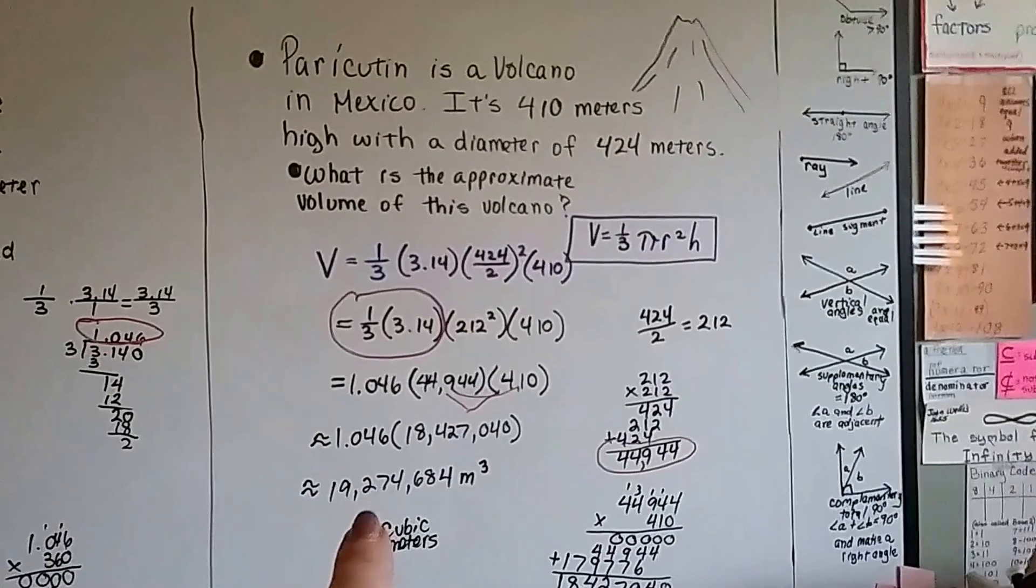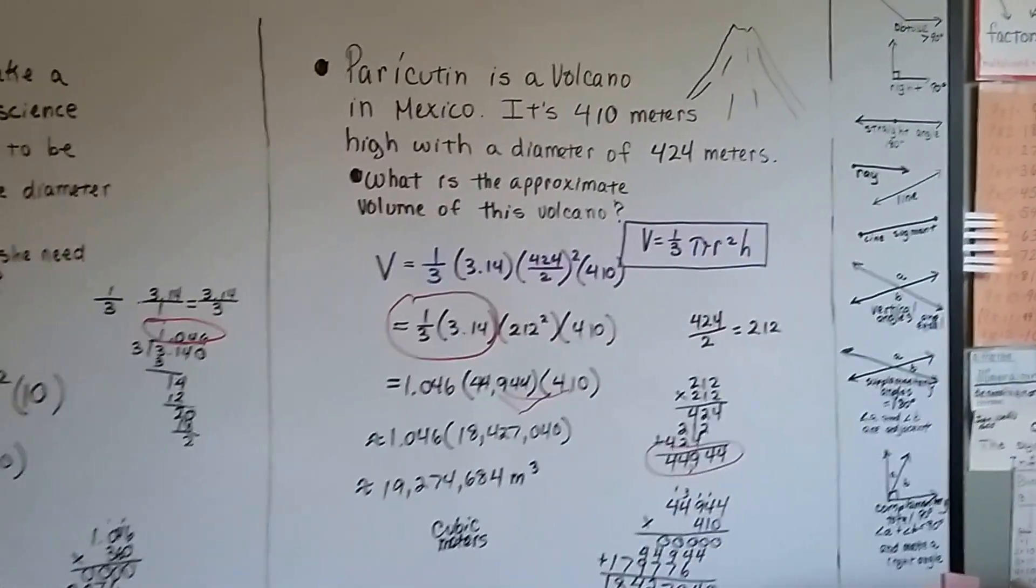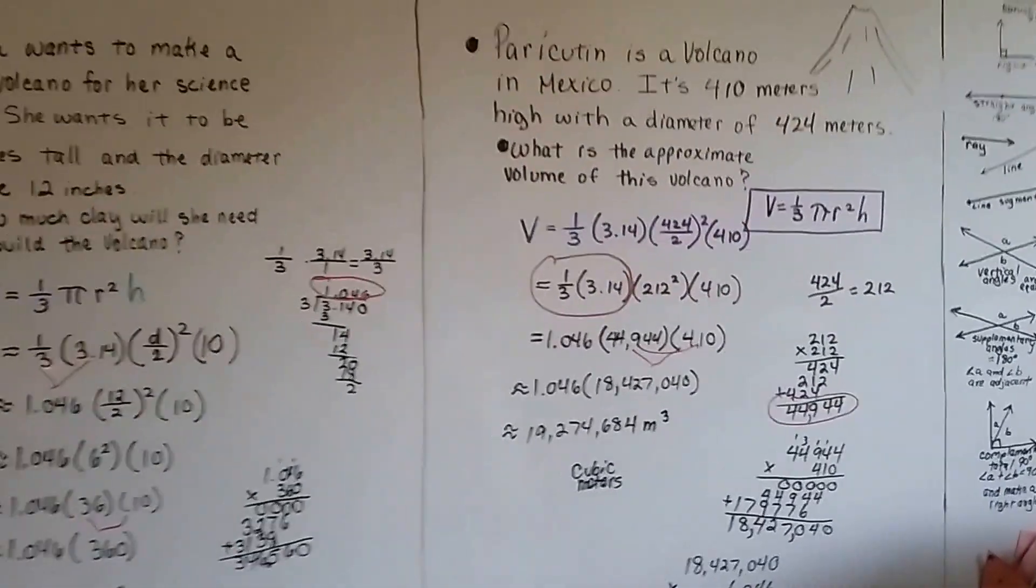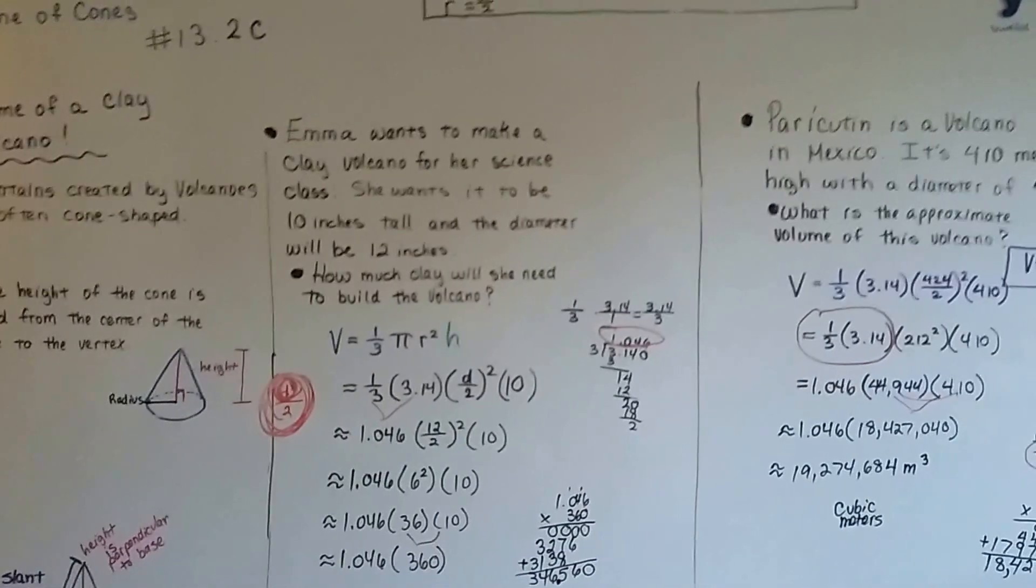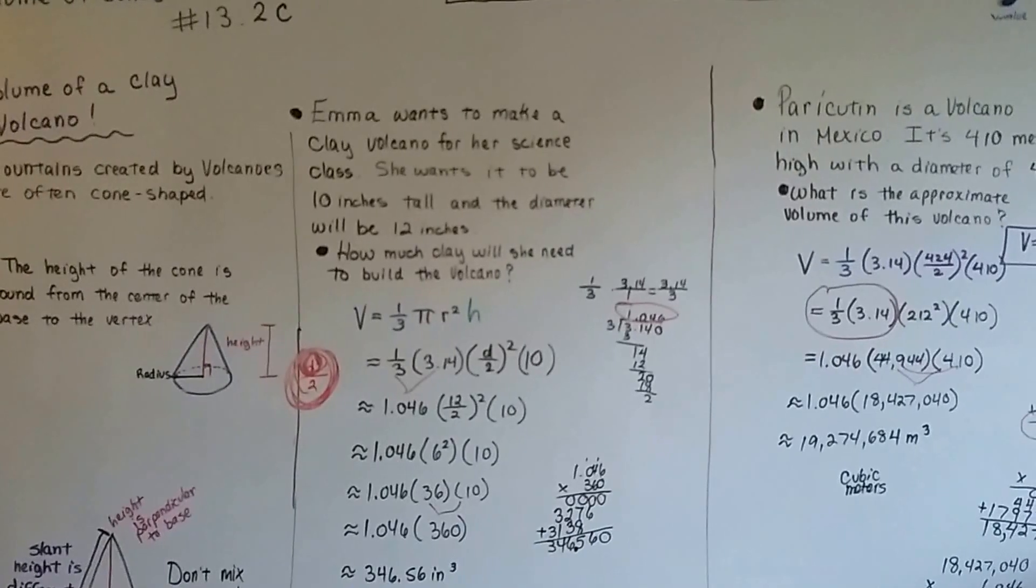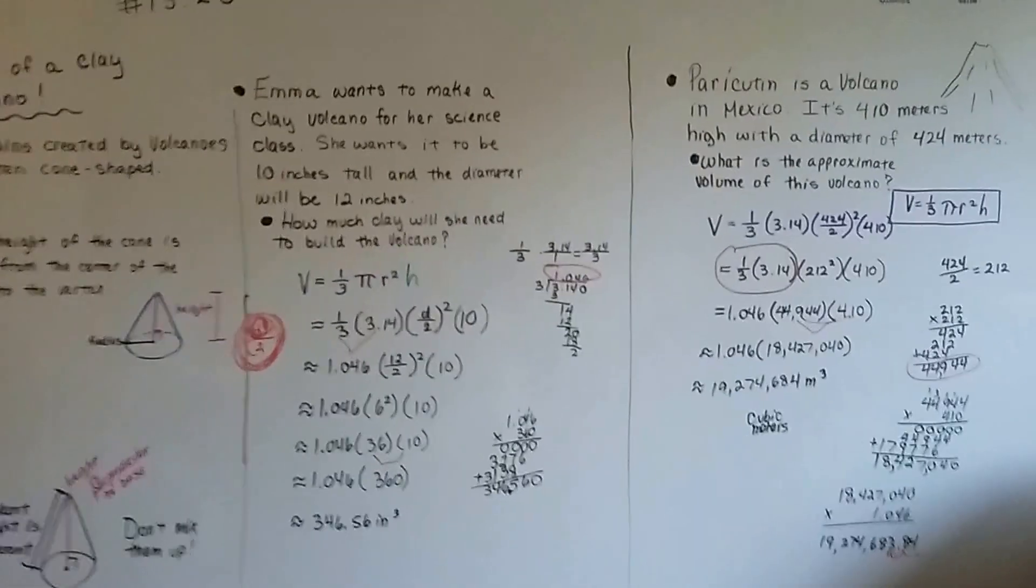That's how much soil and dirt and rocks are in the Paracutin volcano in Mexico. Isn't that something? That's a lot of rock and dirt and everything, isn't it? Okay, we're going to move on to our next topic. We're doing volume of a sphere next in 13.3a. I hope I'll see you there. Bye.